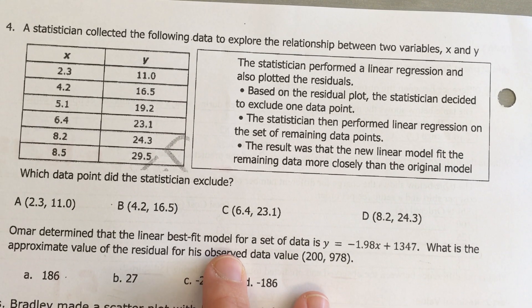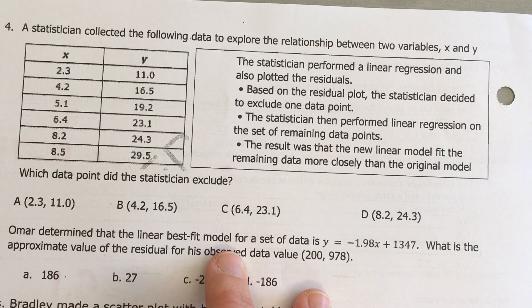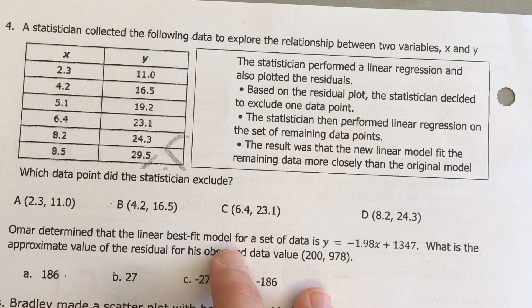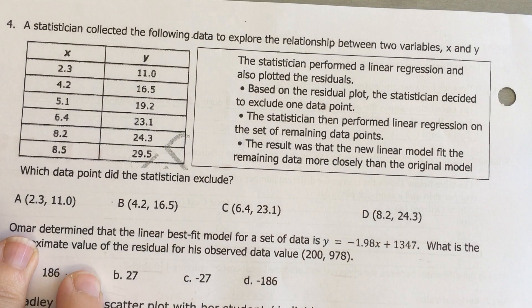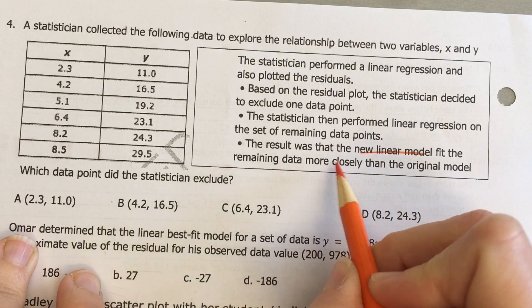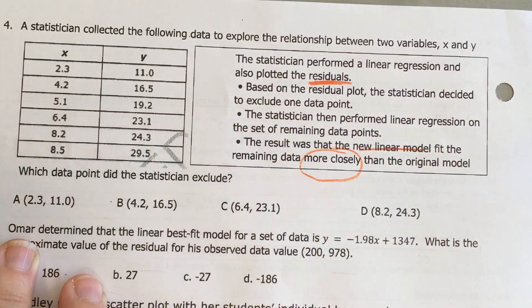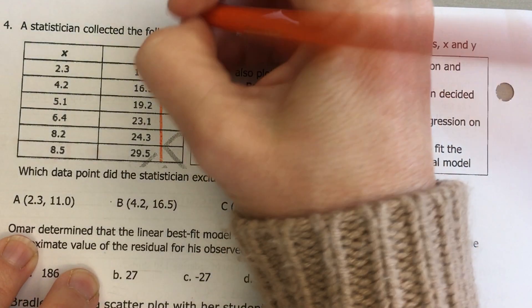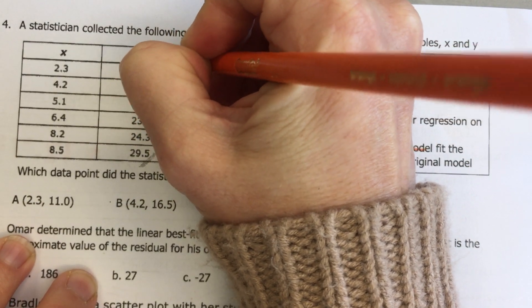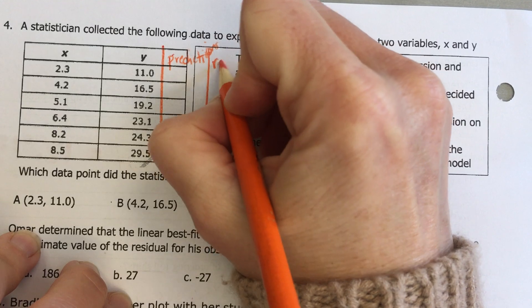Number 4: A statistician collected data to explore the relationship between two variables x and y. The statistician performed a linear regression and also plotted the residuals. Based on the residual plot, the statistician decided to exclude one data point, then performed linear regression on the remaining data, resulting in a model that fit more closely than the original. So let's find the residuals — we need our predictions and then we'll find each residual.